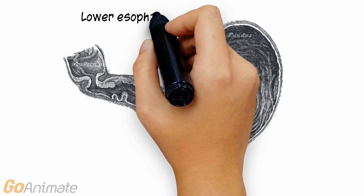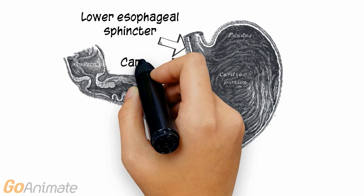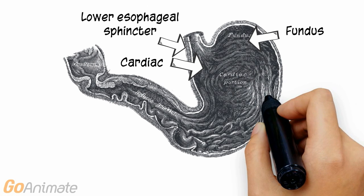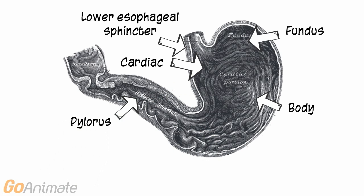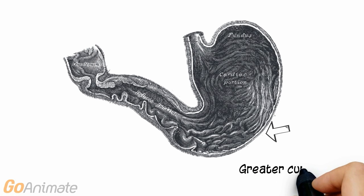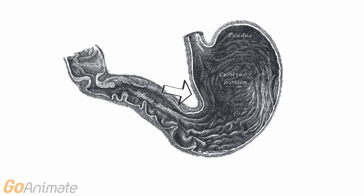The stomach consists of various parts. The first portion is called the cardiac region. Here is the fundus, the large body, and the pylorus. The inside of the stomach consists of folds or rugae, which help to mix the food. The stomach also contains two curves: the greater curvature and the lesser curvature.